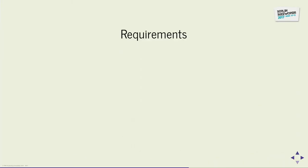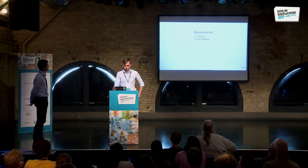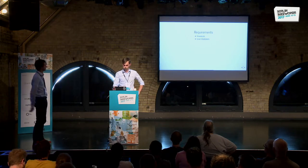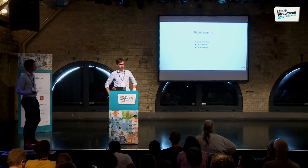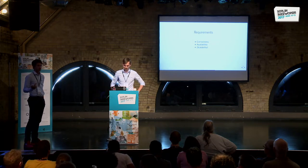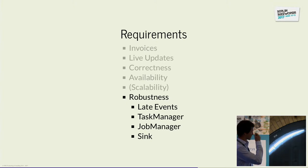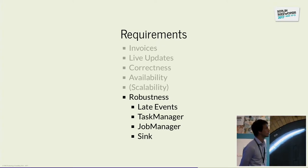Let's recap the requirements and check them during the demo. We have functional requirements: correct invoices on one hand, and live updates queryable via the web UI on the other. Then we have non-functional quality goals: correctness and availability. We won't look at scalability since we only have nine customers. For robustness, we will look at late arriving events and out-of-orderness, task manager and job manager failures, and also failures of the downstream invoicing system.